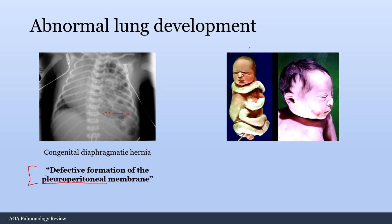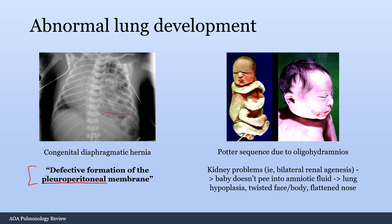They may describe a baby with a flattened nose, twisted extremities, and lung hypoplasia — that would be Potter sequence, due to oligohydramnios, which is decreased amniotic fluid. One major cause is bilateral renal agenesis: the baby can't urinate into the amniotic fluid, can't swallow it to develop the lungs, and without amniotic fluid cushioning, they get compressed inside the uterus, causing lung hypoplasia, twisted face and body, and a flattened nose.